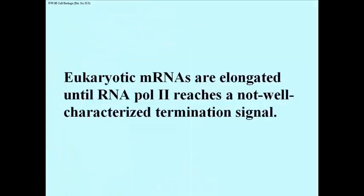Eukaryotic mRNAs are elongated until RNA polymerase II reaches a termination signal. The characteristics of termination signals in eukaryotes are not as well understood as they are for E. coli.